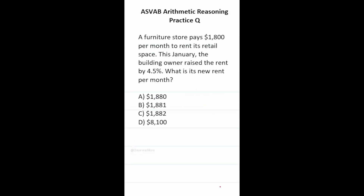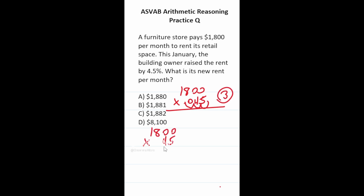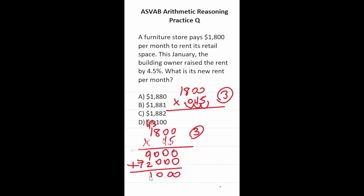This question says a furniture store pays $1,800 per month to rent its retail space. This January, the building owner raised the rent by 4.5%. What is its new rent per month? We do 1,800 times 0.045, shifting the decimal three places right to get 1800 times 45. Working through: 5×0=0, 8×5=40 carry 4, 5×1+4=9; then 4×0=0, 8×4=32 carry 3, 4×1+3=7. Adding gives 81000, with three decimals back that's $81. Adding $81 to $1,800 gives the new rent of $1,881, which is B.